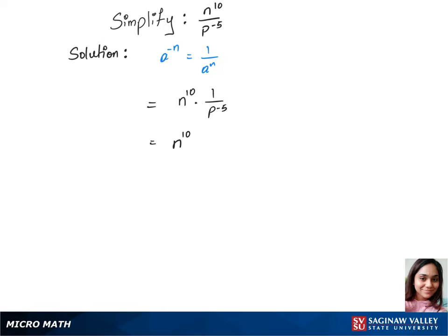Now we can write this as n power 10, and converting according to the formula, we write it as p power 5. This is our answer.